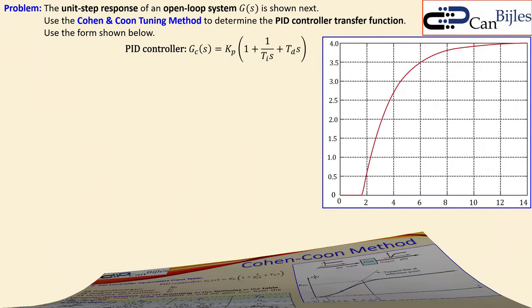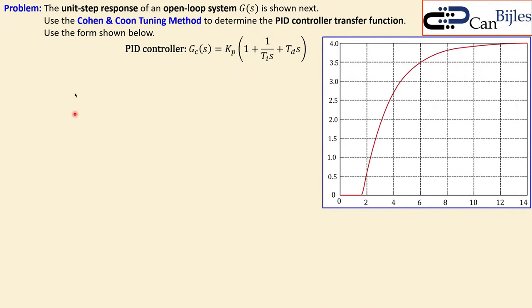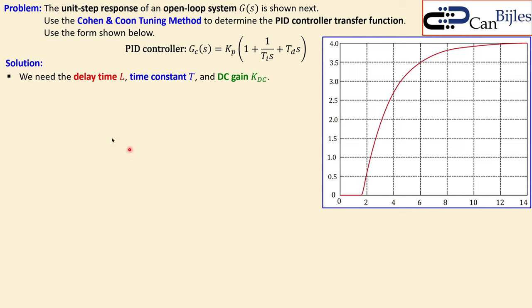Now let's look at an example using the Cohen-Coon tuning method. We have a unit step response — it is a unit step input — and the response of an open loop system G is shown. We would like to use the CC method to determine the PID controller transfer function. We have three parameters to identify from this curve. Let's look at the solution and determine the delay time, time constant, and DC gain.